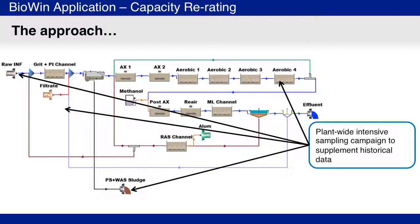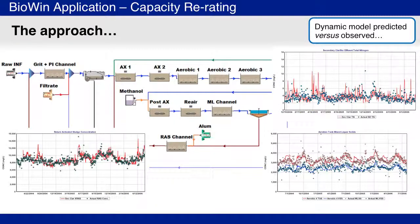After setting up the BioWin flow sheet and incorporating all operational aspects, the model was calibrated to two years of time-varying performance data. In order to accomplish this, a supplemental plant sampling campaign was conducted to augment the existing dataset. Minor adjustments were made until the model predictions matched the observed plant responses for a variety of parameters.